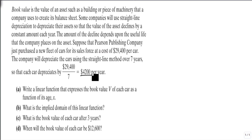Our model is going to be the value. For part a, the value at a given time equals the initial value, $29,400, minus $4,200 times the number of years, whatever year it is that we're asking for.